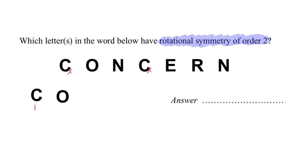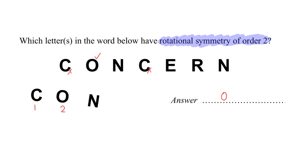Next, let's try letter O. Turning: one time — two times. So O is one of the answers. Let's try N: one — two. So N is also one of the answers.